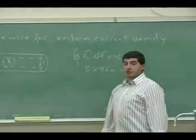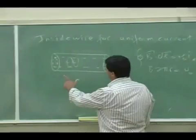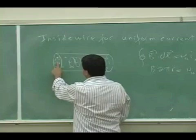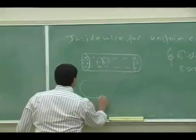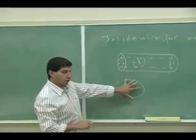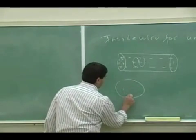This time the current enclosed is only going to be the current enclosed in this portion of the cylinder. So if I take a look at the cross-sectional view of the wire, this is the whole wire and this is my current.